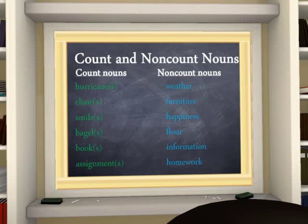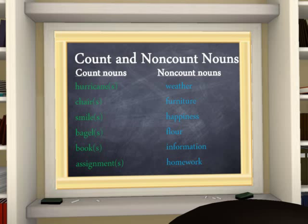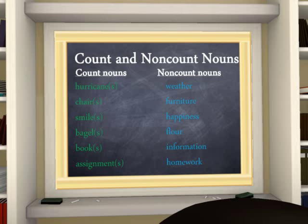We have yet another classification of nouns: count and non-count. Many nouns can be singular or plural — these are count nouns. Non-count nouns, on the other hand, have only a singular form. Here is a tip: if you can add a number to the front of a noun and put an S at the end of it, you have a count noun. Hurricane, chair, smile, bagel, book, and assignment are all count nouns — you can add an S to the end of each word and get the plural form.